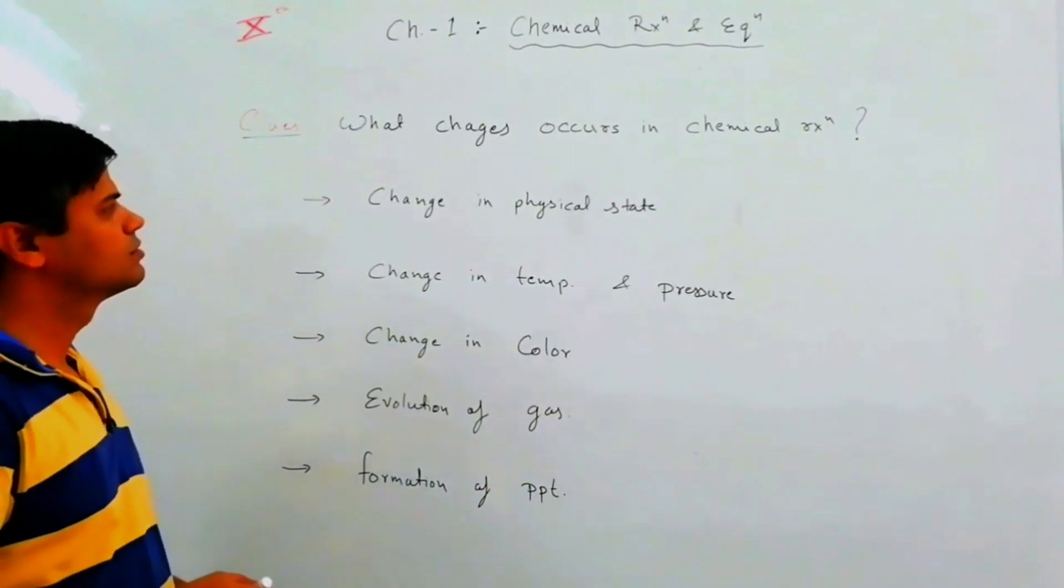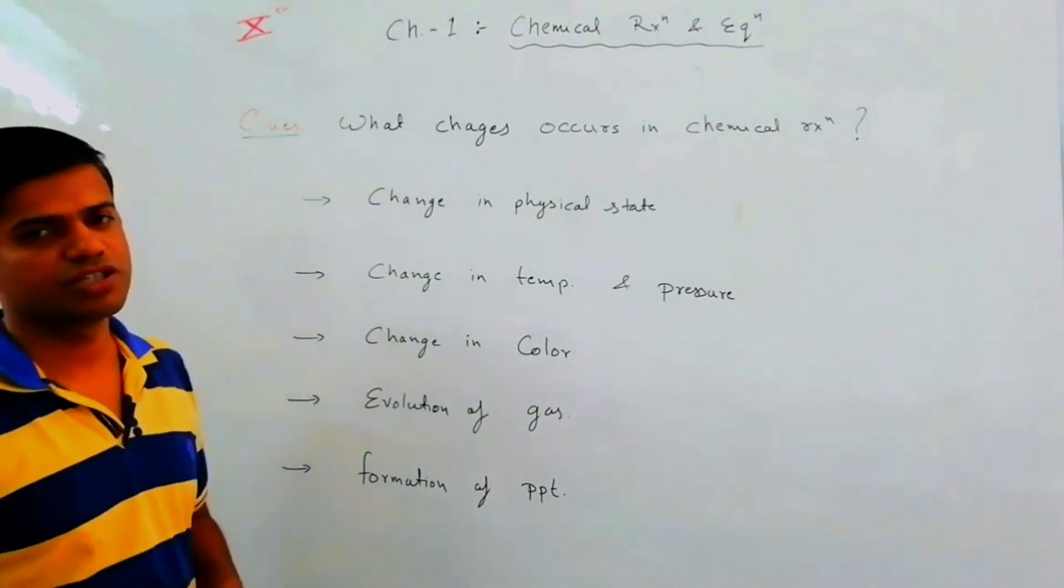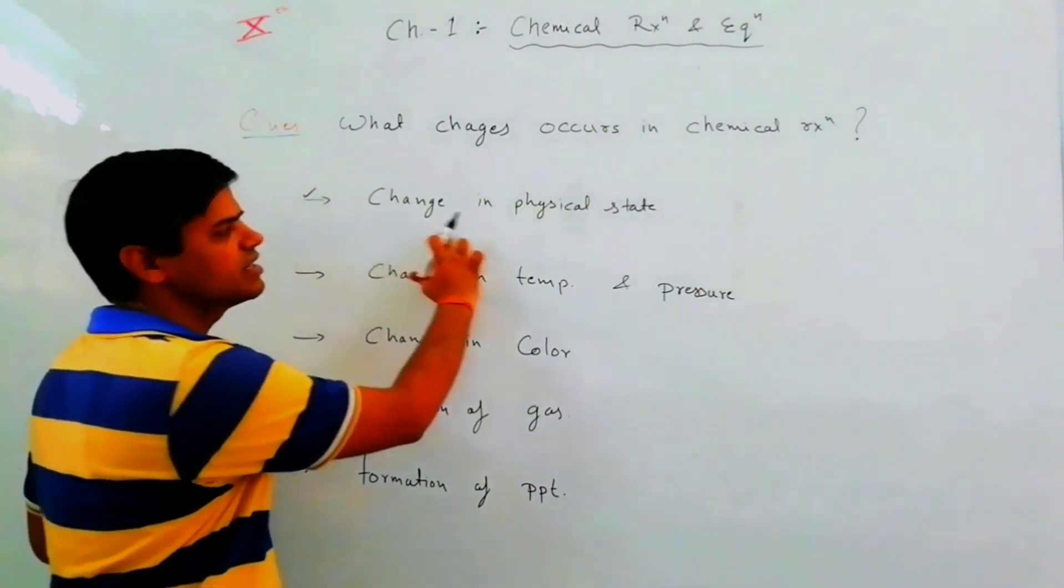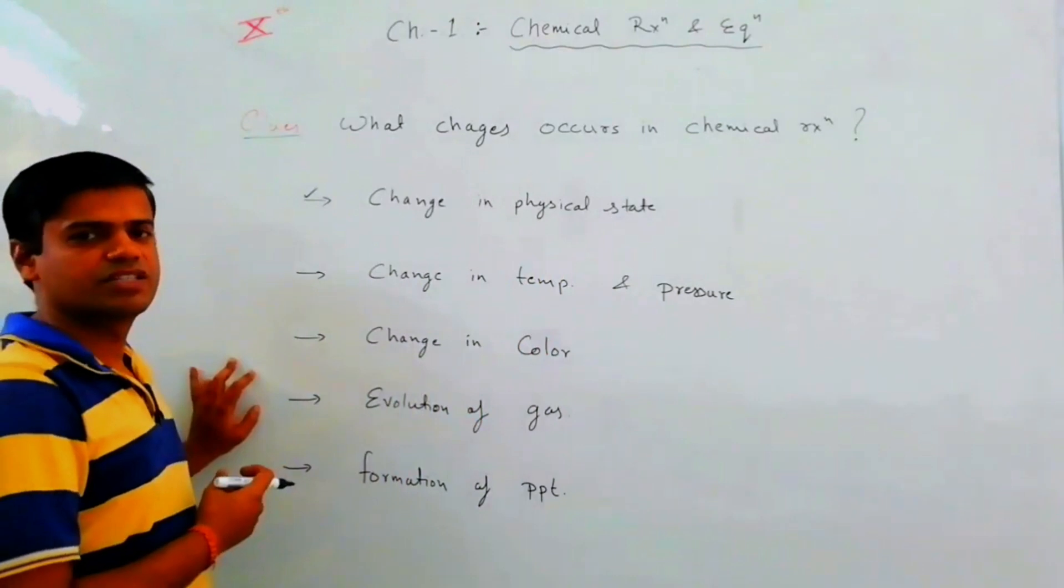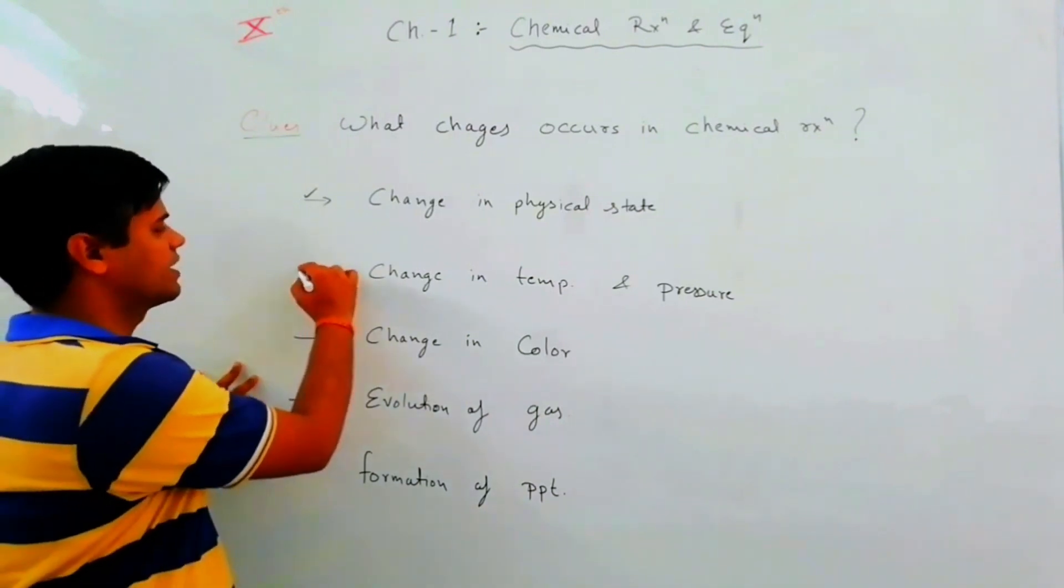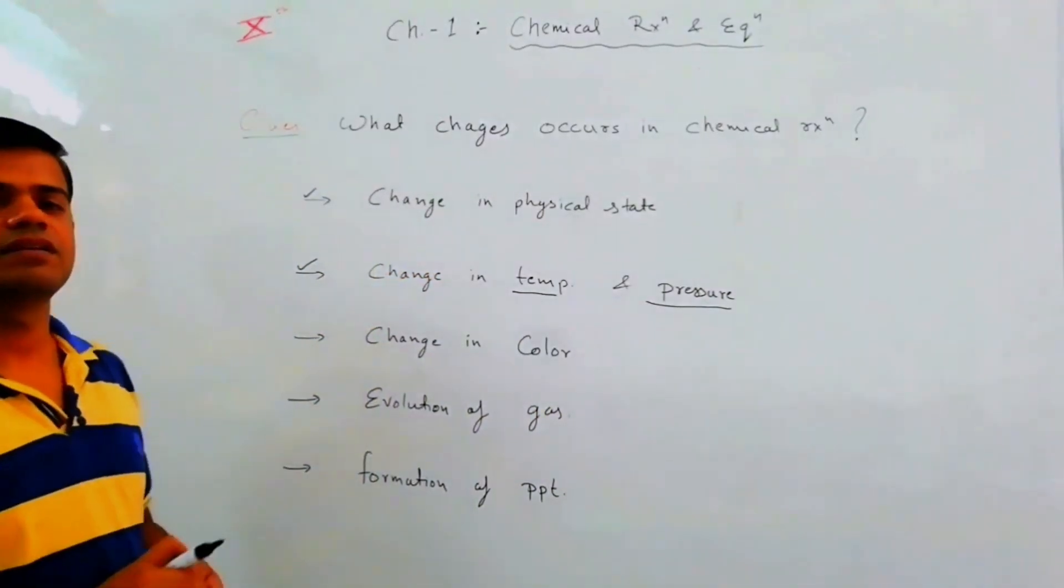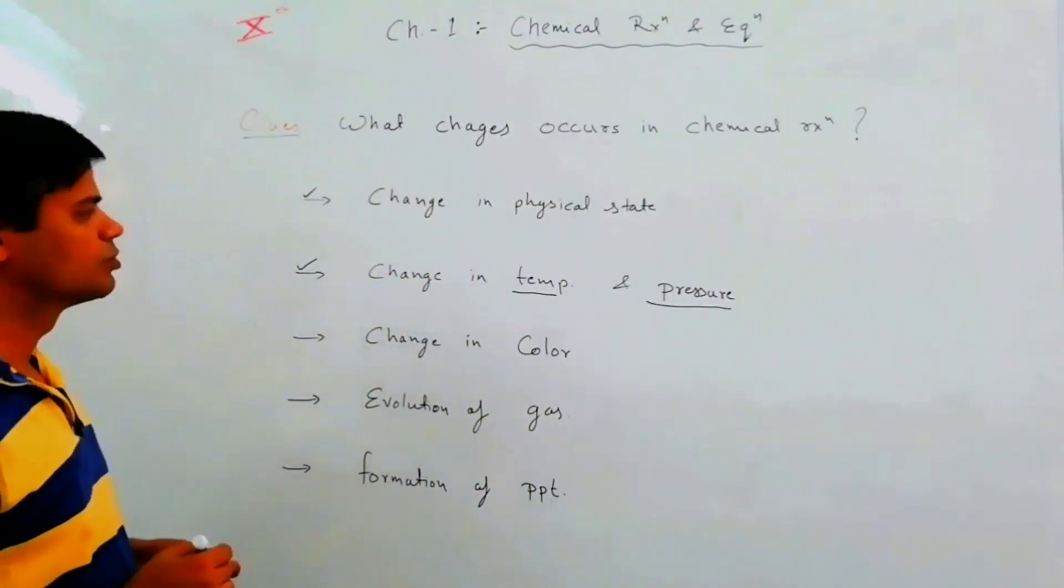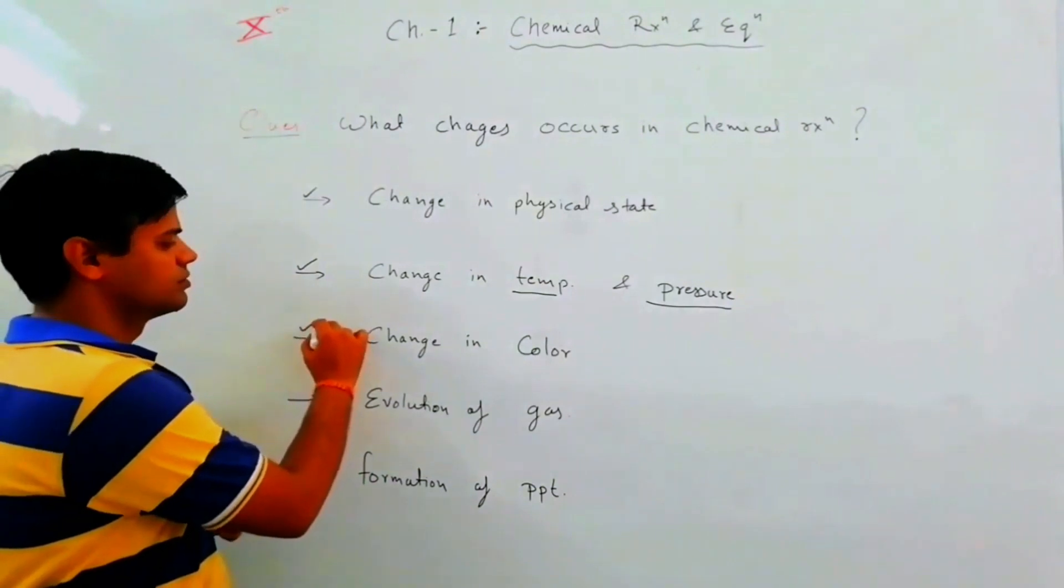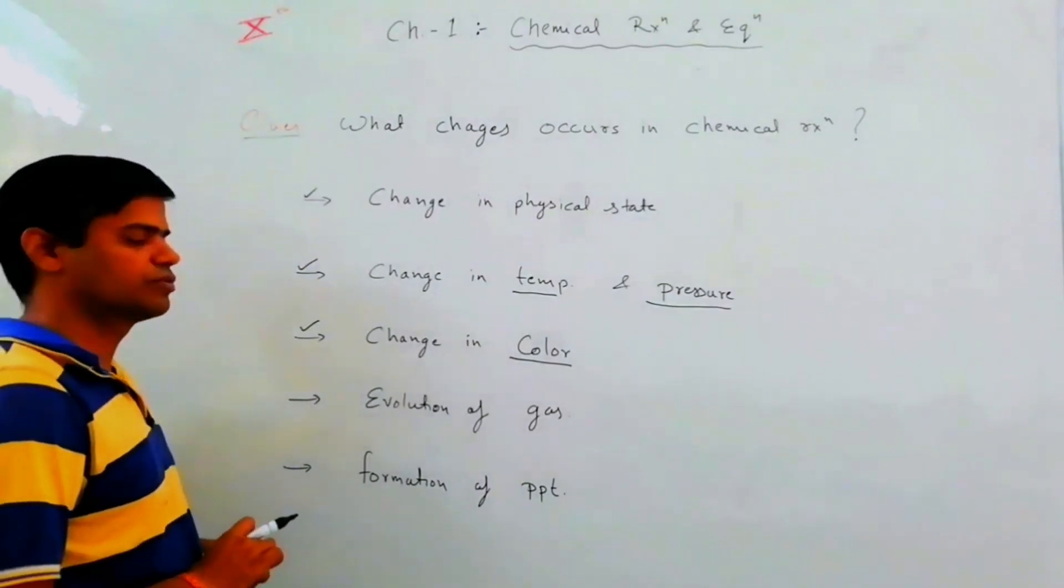What changes occurs in chemical reaction? How can we identify chemical reaction? First, change in physical state. If we observe change in physical state, we can see chemical reaction proceed. Second, change in temperature and pressure. If we see change in temperature and pressure, we can identify chemical reaction. Third, change in color between reactants and products.